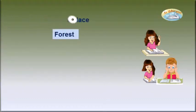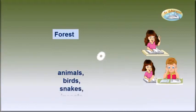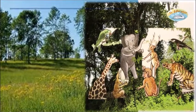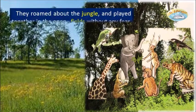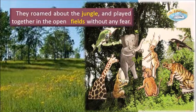Here, 'forest' is the name of a place. The other names — animals, birds, snakes, insects — are names of animals. Now identify the names of places from this line: 'They roamed about the jungle and played together in the open field without any fear.' Can you tell the names of places from this context?